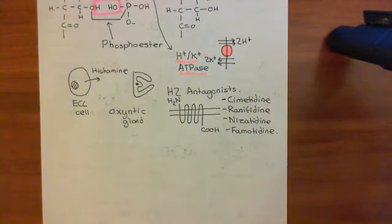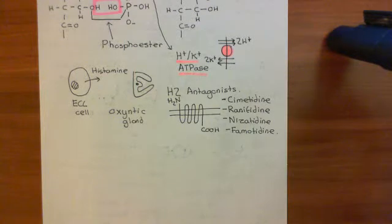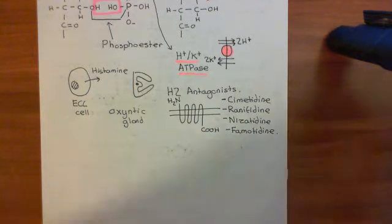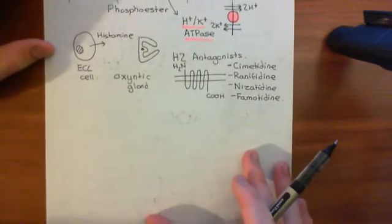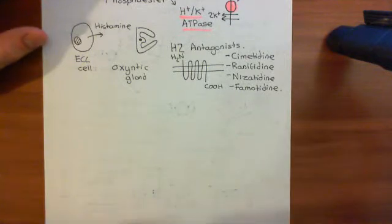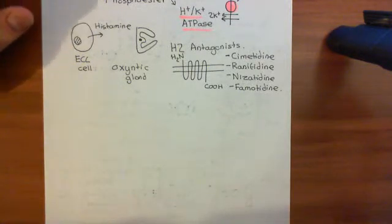So what we now want to discuss is how you can increase gastric acid secretion in response to a meal. If you've just eaten a meal, then you will want to increase the secretion of gastric acid. Now, how does this happen? Basically, gastrin is an important hormone in regulating the secretion of hydrochloric acid by the parietal cells.